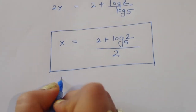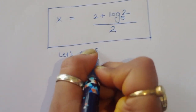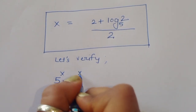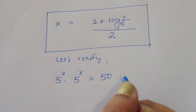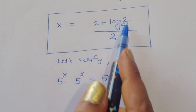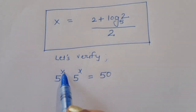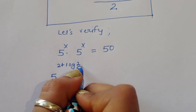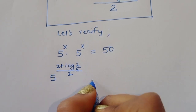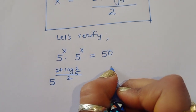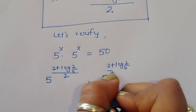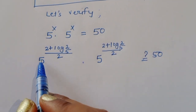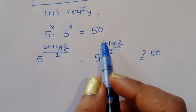Now let's verify whether this is correct or not. The question is 5^x · 5^x = 50, and the value of x is (2 + log₅2) / 2. Substituting: 5^((2 + log₅2)/2) times 5^((2 + log₅2)/2) — does this equal 50?